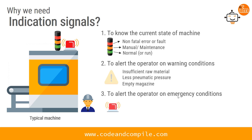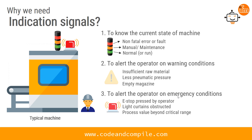The third reason is to alert the operator on emergency conditions, generally done by a buzzer. Emergency conditions could be an e-stop pressed by the operator, obstructed light curtains used for safety, or a process value going beyond a critical range such as over-pressure or over-temperature.